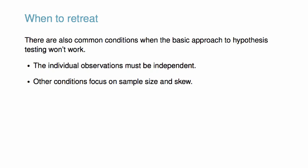Other conditions focus on sample size and skew. For example, if the sample size is too small, the skew is too strong, or extreme outliers are present, then the normal model for the sample mean will fail.